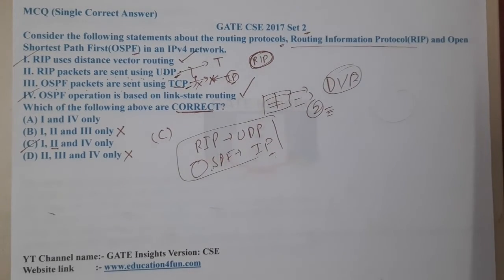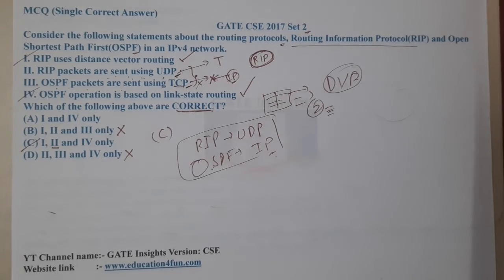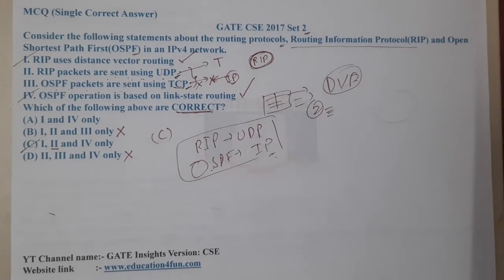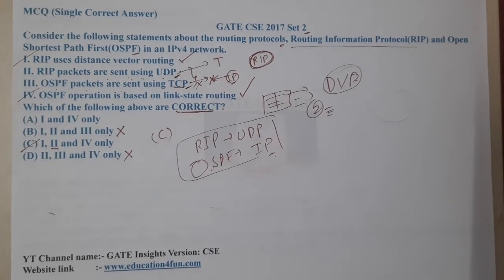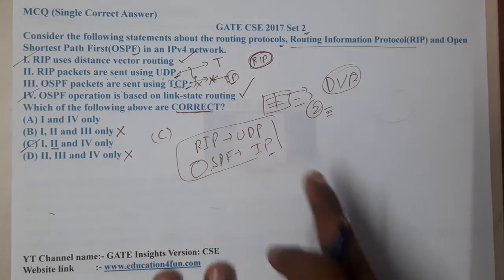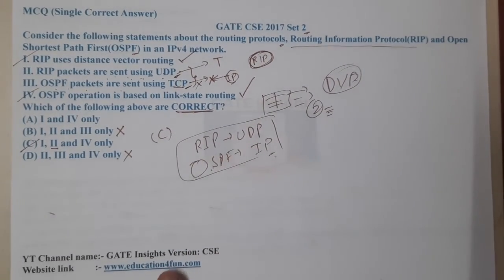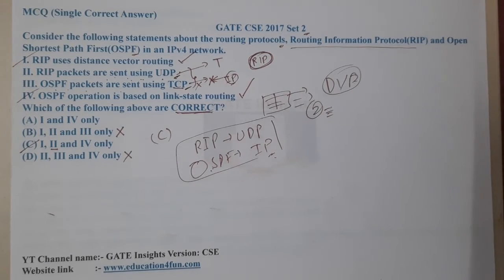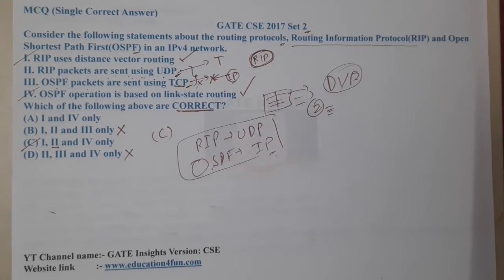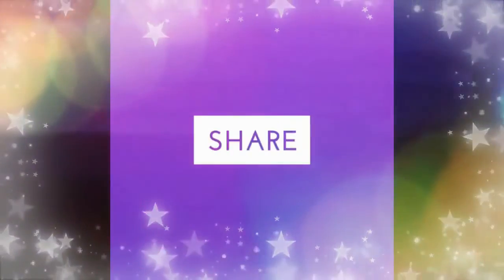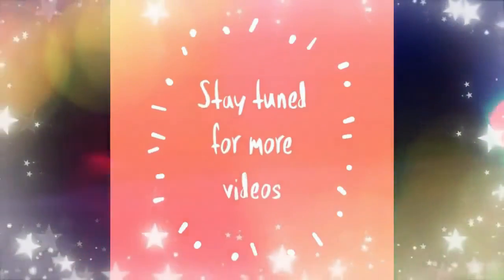With that conclusion, option C is the correct answer — statements I, II, and IV are correct. I'm sorry for not explaining these two points earlier. RIP sends packets via UDP and OSPF sends packets directly via IP. It's a fairly easy question once you know the concept. I hope everyone got a clear idea. Thank you, like, share and subscribe for more videos.